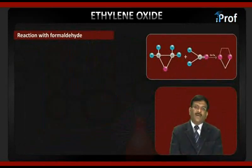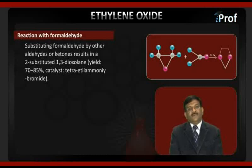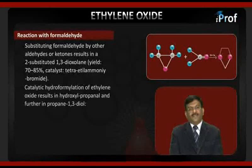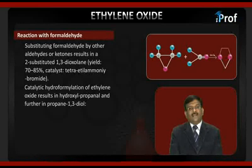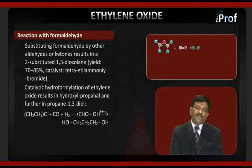Substituting formaldehyde by other aldehydes or ketones results in a 2-substituted 1,3-dioxolane, which gives 85% yield in the presence of tetrabutylammonium bromide. Catalytic hydroformylation of ethylene oxide results in hydroxy propanol and further in propane-1,3-diol.